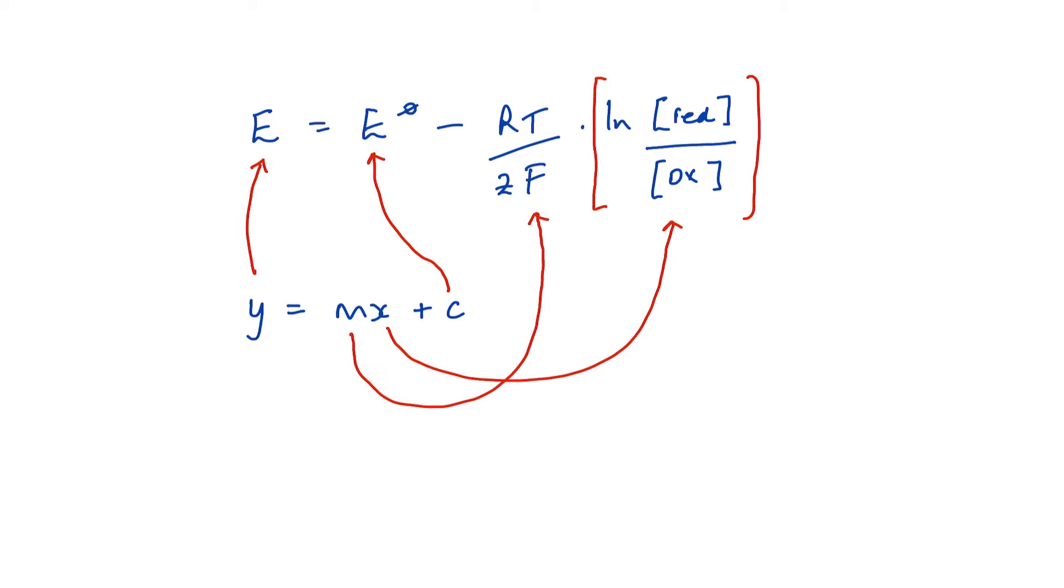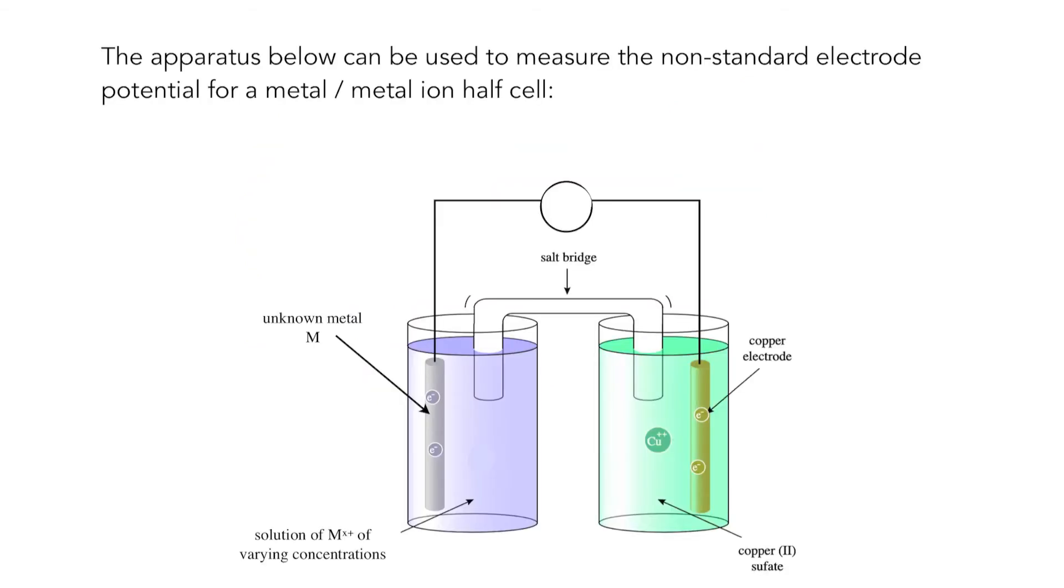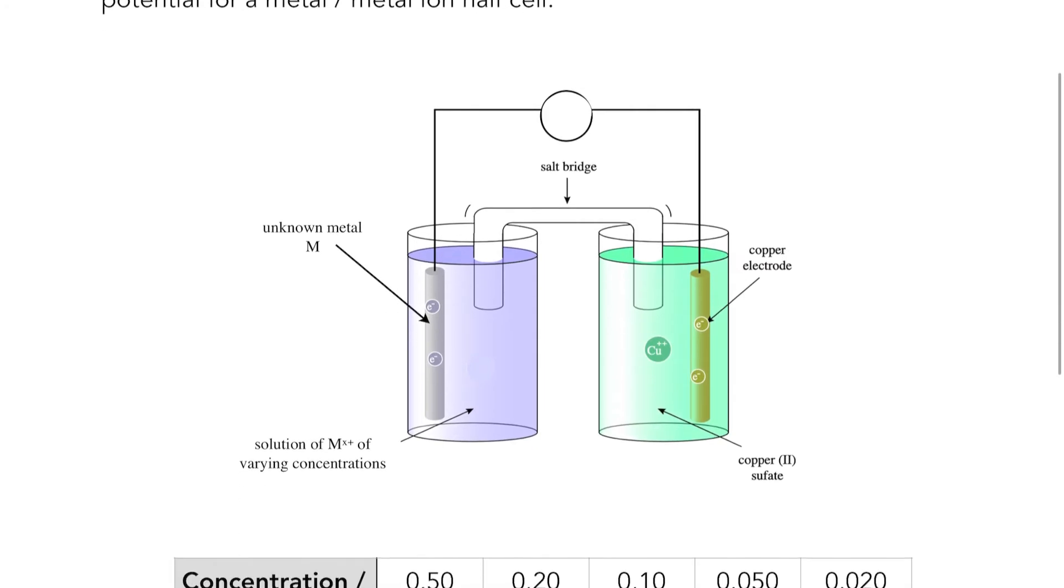Let's have a look at a question. Setting the scene: the apparatus below could be used to measure the non-standard electrode potential for a metal/metal ion half cell. So in one half cell we've got a strip of metal we don't know what it is.